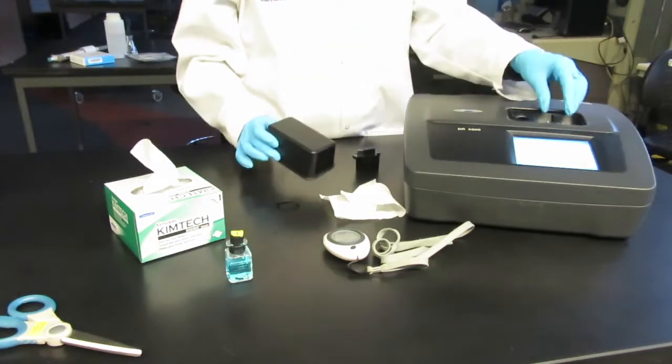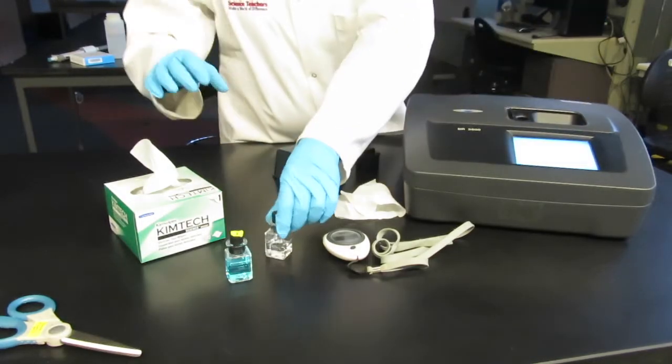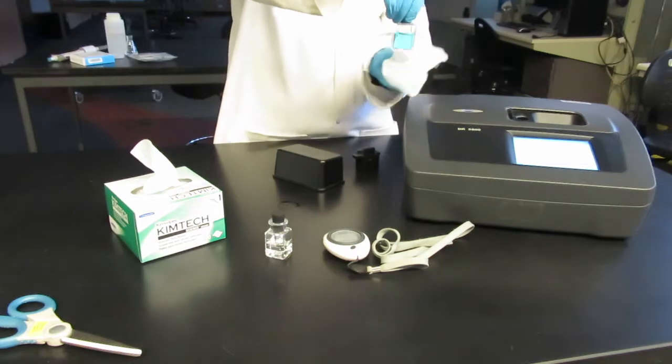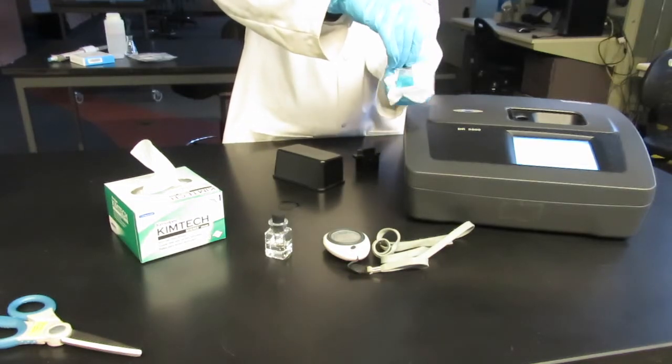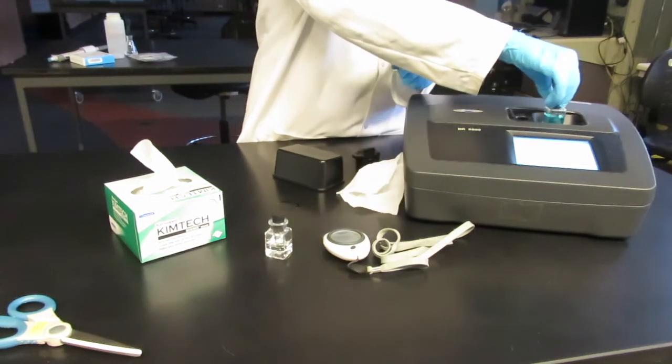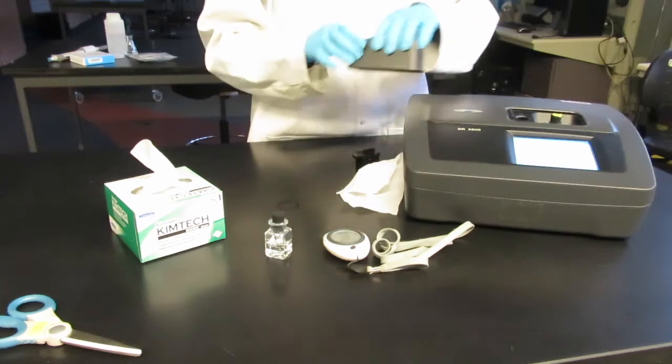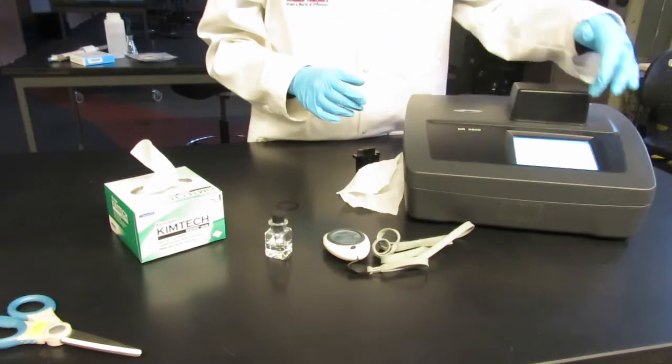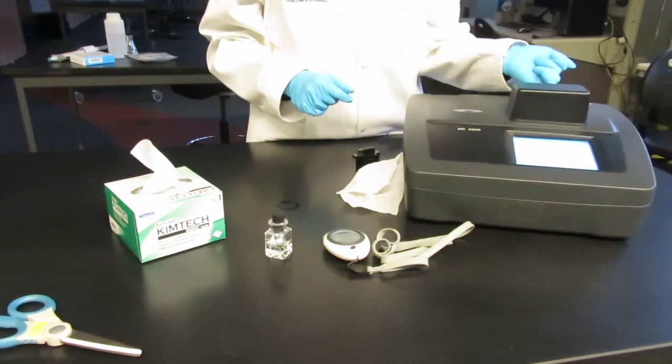Take the blank cuvette out of the spectrophotometer and using a kim wipe wipe your sample cuvette. You will need to measure this sample within 15 minutes otherwise over processing will occur and you will not receive accurate results.